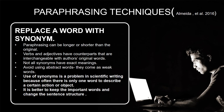First, replace a word with a synonym. Paraphrasing can be longer or shorter than the original — concentrate on the meaning, not on the words. Verbs and adjectives have counterparts that are interchangeable with the author's original words. Not all synonyms have exact meanings, so look at the thesaurus and double-check with a dictionary. Avoid using abstract words, as they come across as weak. Use of synonyms is a problem in scientific writing because often there is only one word to describe a certain action or object. It is better to keep the important words and change the sentence structure.